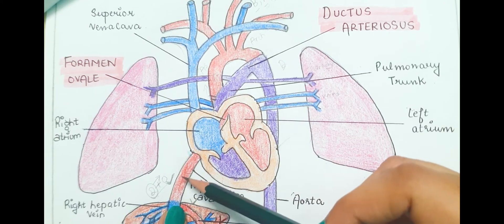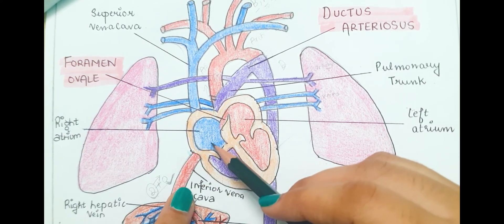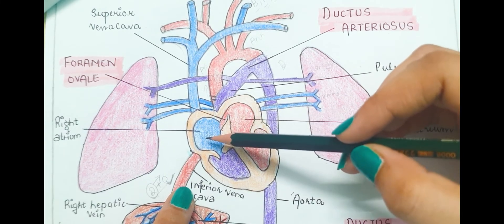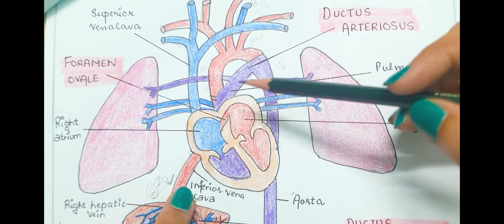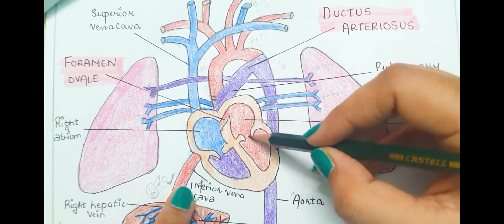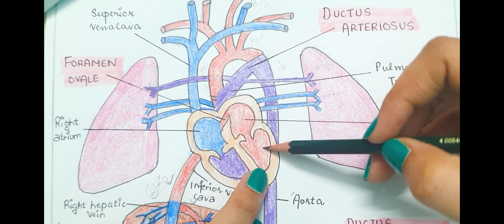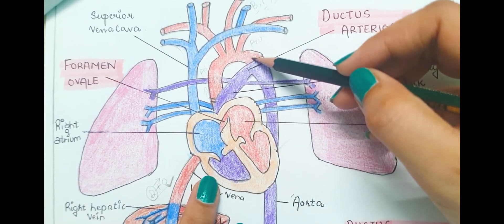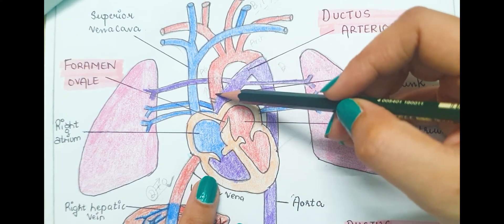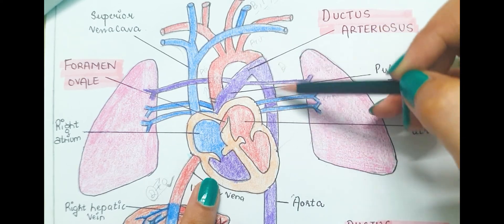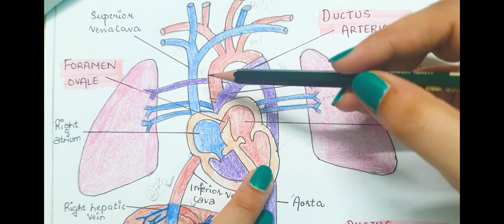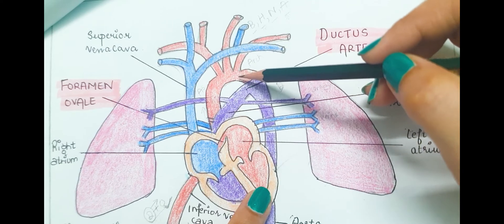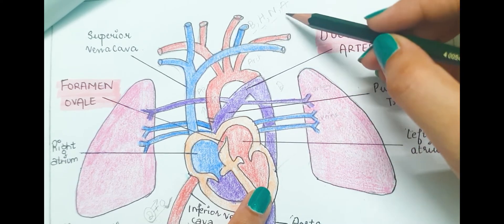Blood from the inferior vena cava enters the right atrium, and most of it passes directly from the right atrium to the left atrium through the foramen ovale. The oxygenated blood from the left atrium then enters the left ventricle, and during ventricular systole, blood enters the aorta. From the ascending aorta and arch of the aorta, oxygenated blood is distributed to the brain, heart, neck, and arms.